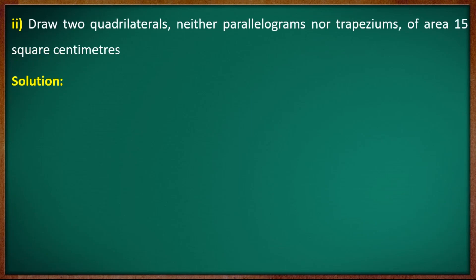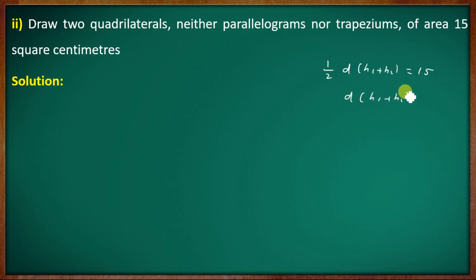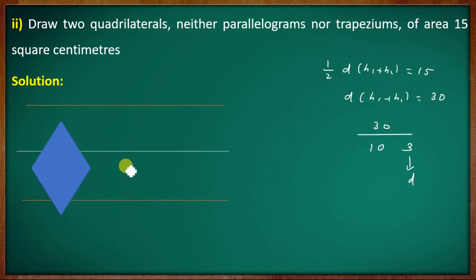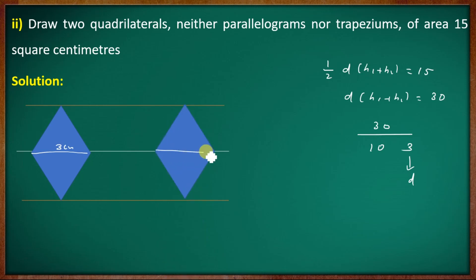Draw two quadrilaterals, neither parallelogram nor trapezium, of area 15 cm². The area = 1/2 into D into (H1 + H2) = 15, so D into (H1 + H2) = 30. The diagonal is 3 cm. This is the parallel line construction for the quadrilateral with diagonal equal to 3 cm.